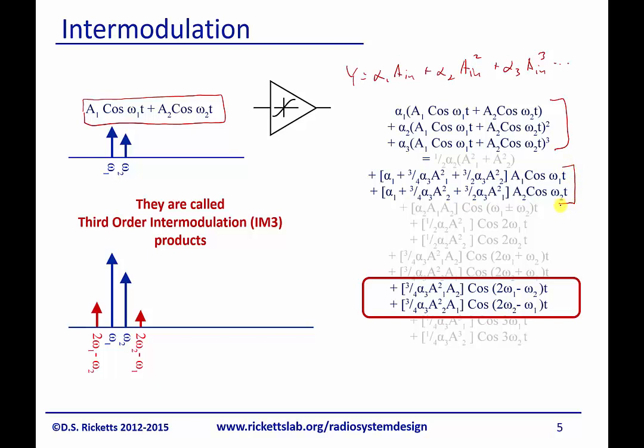The first piece is what happens to the fundamentals. So you can see that the fundamentals have their linear gain, and they also have the gain that we saw before, a nonlinear gain, but that's still representative of their original amplitudes. But then they have these terms here, which are intermodulations.